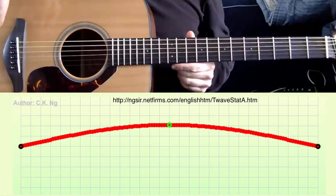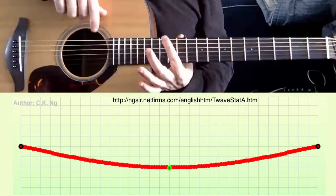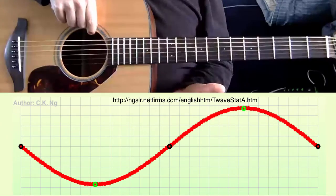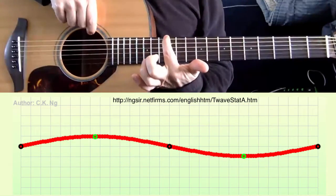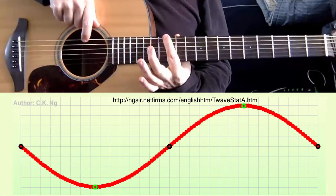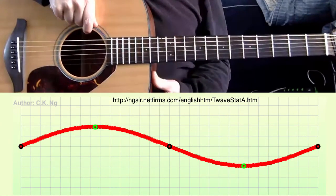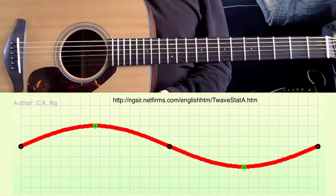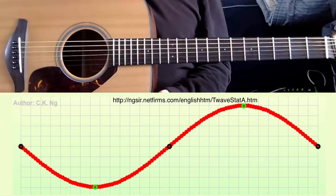And I can create harmonics just by touching and releasing it. Now, when I touch it there, I'm forcing a node to happen right there. So when I touch it at the exact middle and let it go, that's called the second harmonic, or n equals two.